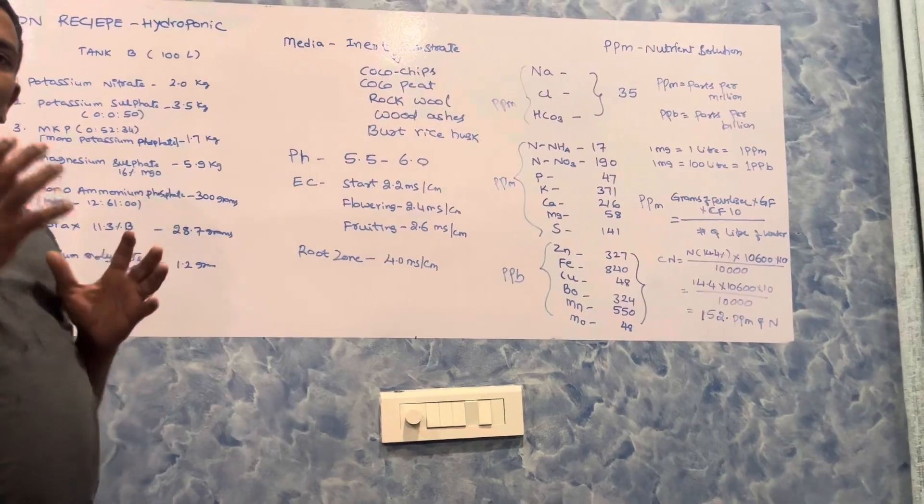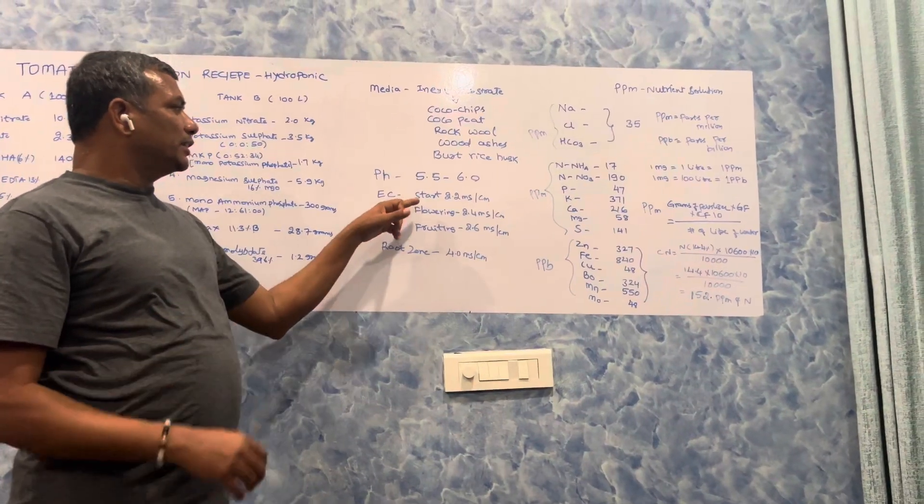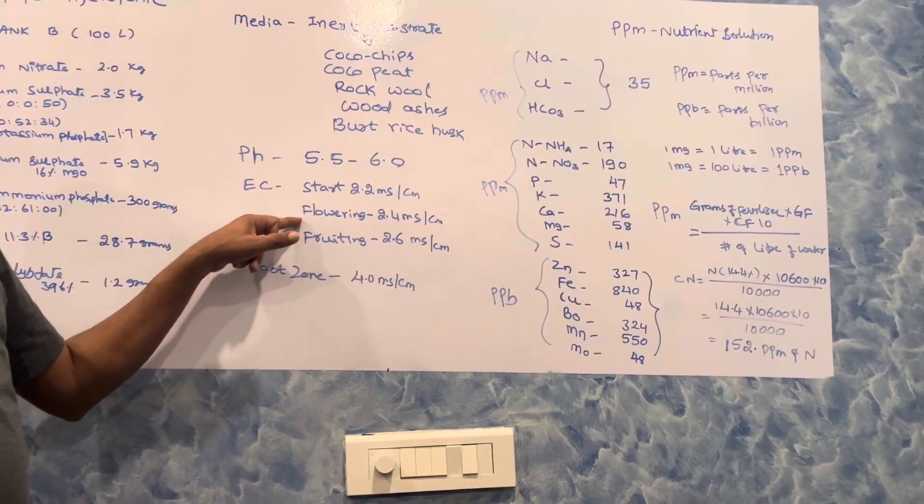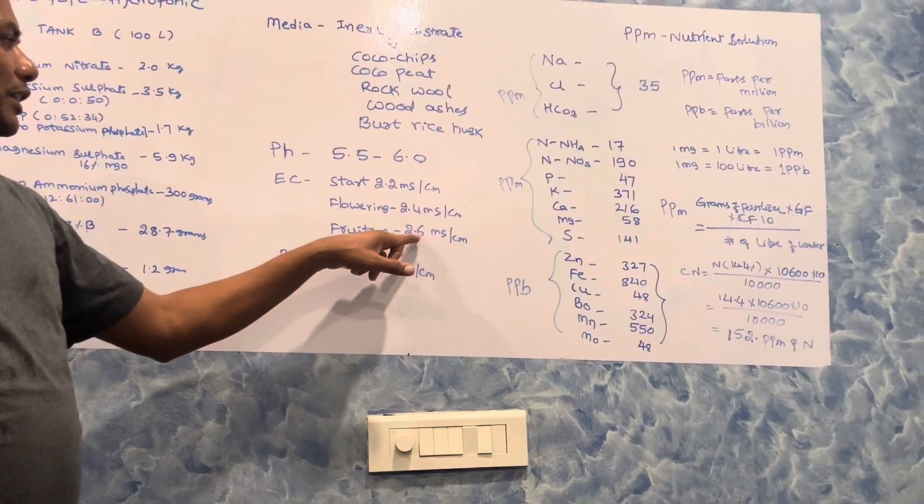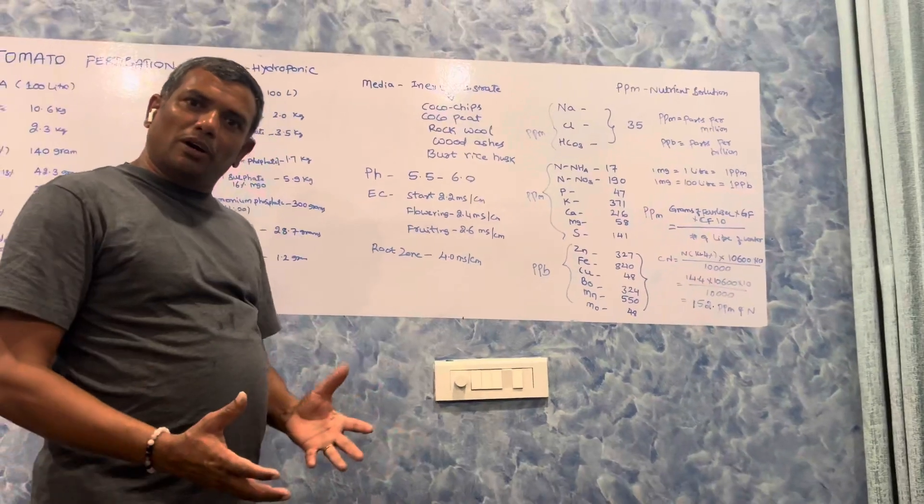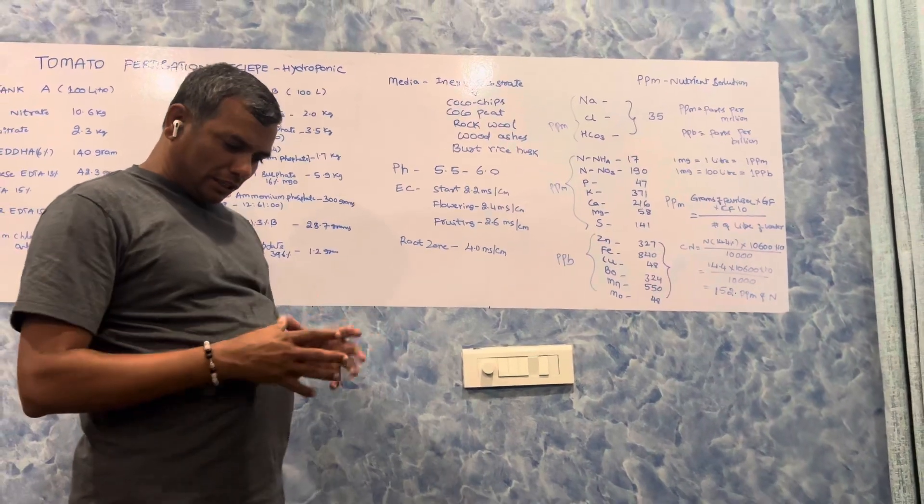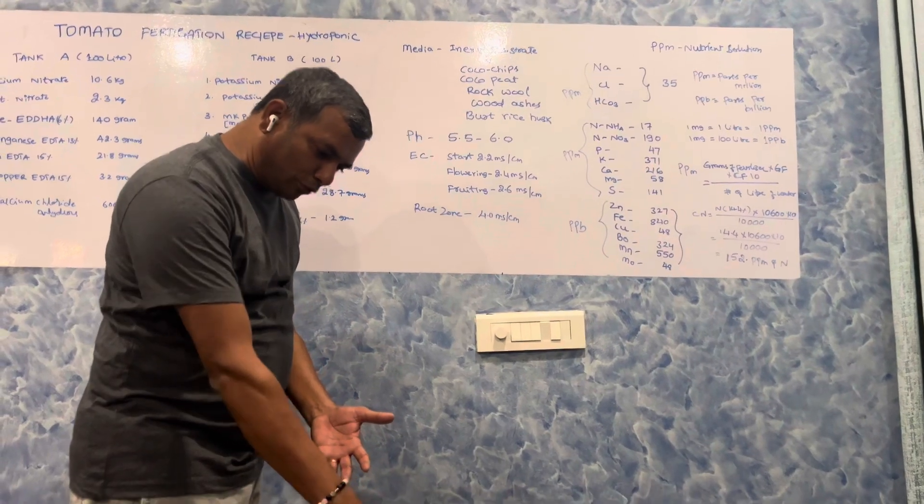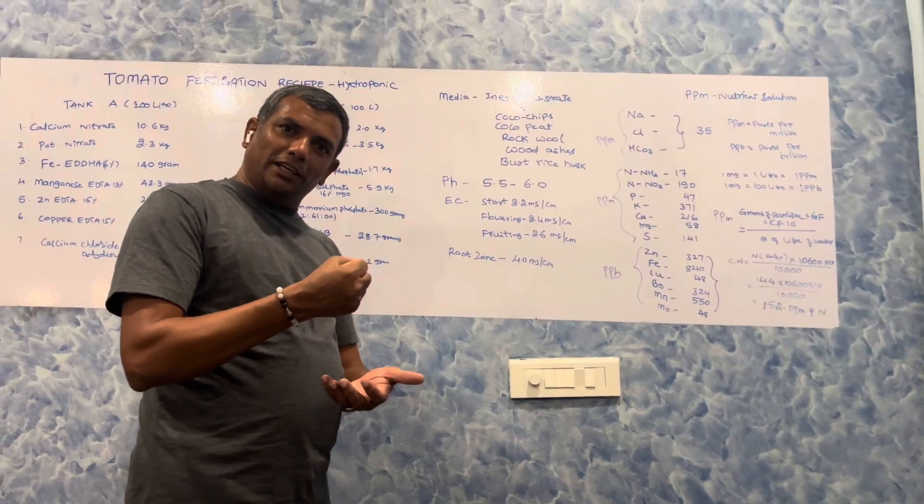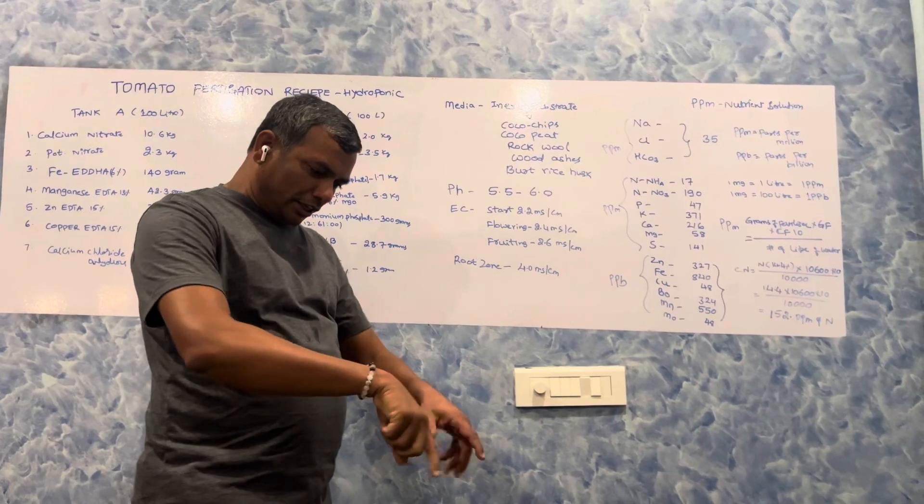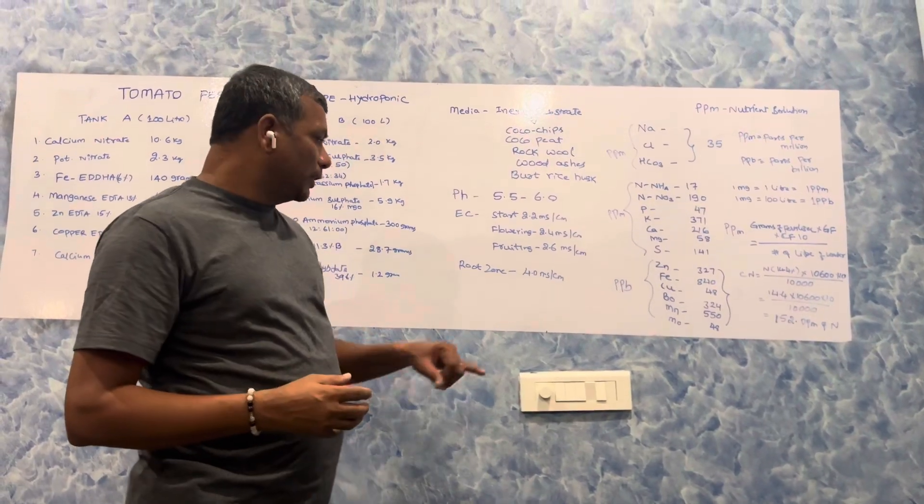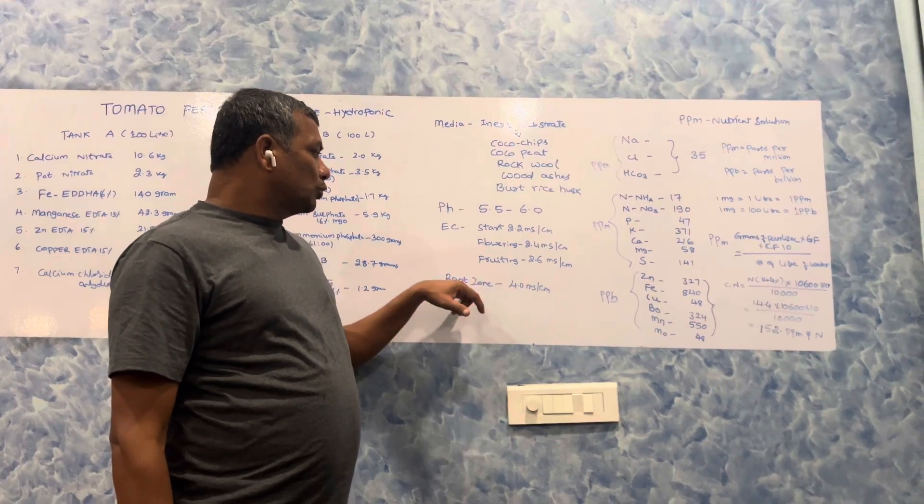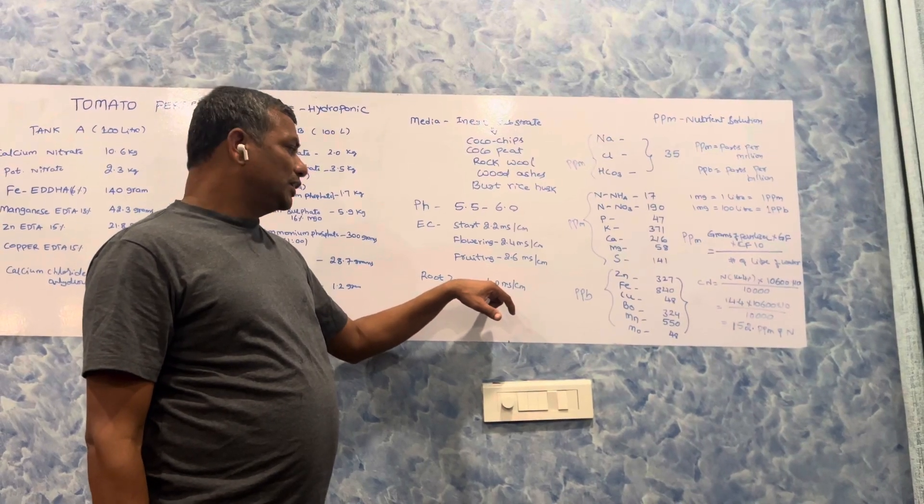What should be the EC? The stack EC should be 2.2 millisiemens per centimeter at flowering stage, 2.4 millisiemens per centimeter at fruiting stage, and 2.6 millisiemens per centimeter during fruiting. The EC in the slab or in the grow bag is called root zone. When you take a fistful of cocopeat and squeeze it and check the EC, that is called root zone EC. The root zone EC should not go more than 4 millisiemens. We can maintain up to 4 millisiemens in the root zone for tomato.